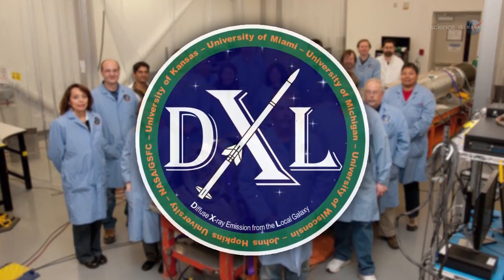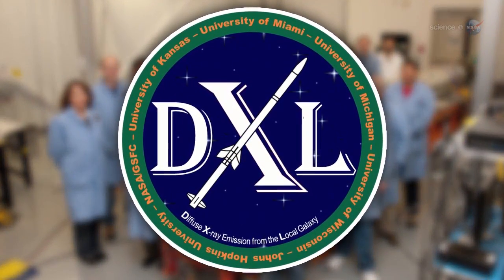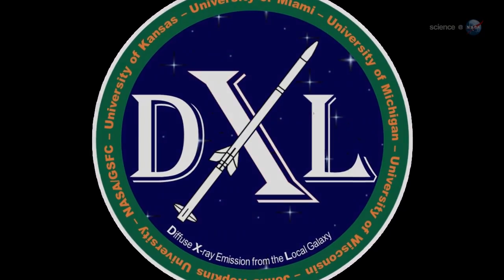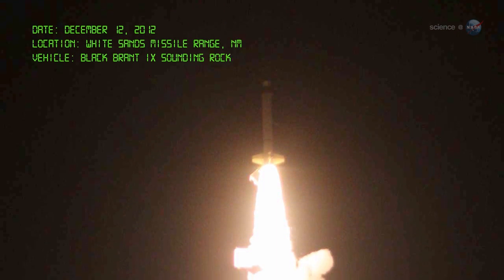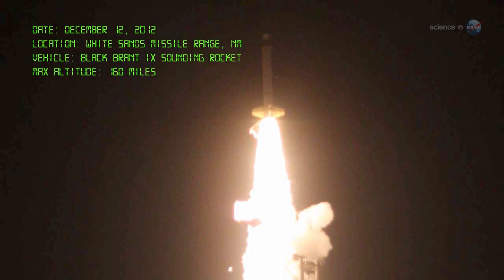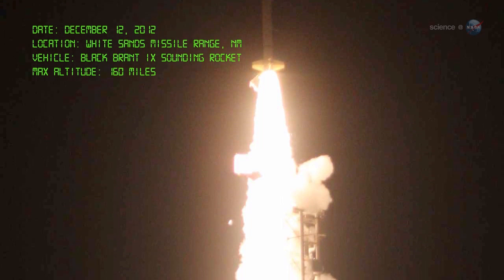The device was named DXL for diffuse X-ray emission from the local galaxy. On December 12, 2012, DXL launched from White Sands Missile Range in New Mexico atop a NASA Black Brant 9 sounding rocket.